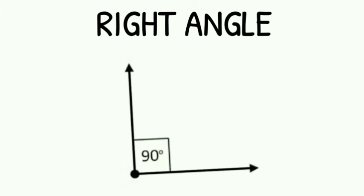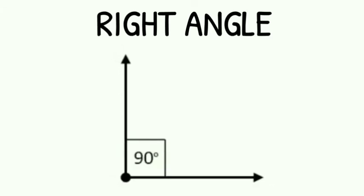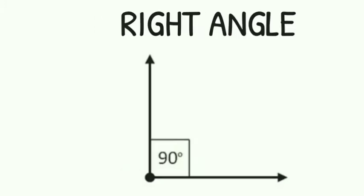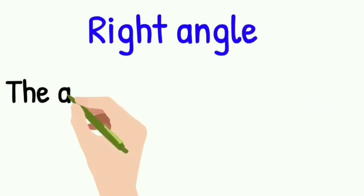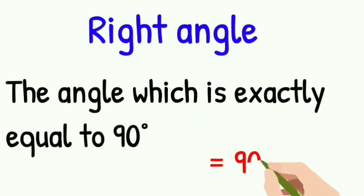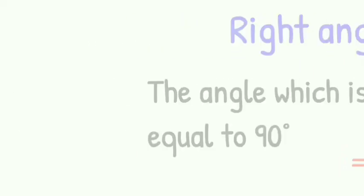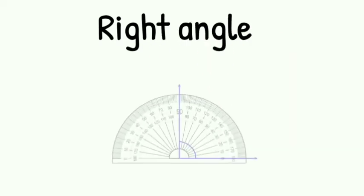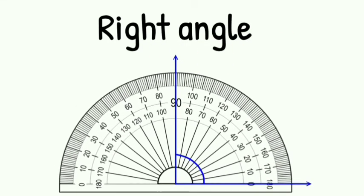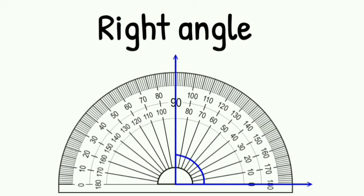Now let us learn about right angle. Right angle is the angle which is exactly equal to 90 degrees. This is the example of right angle.